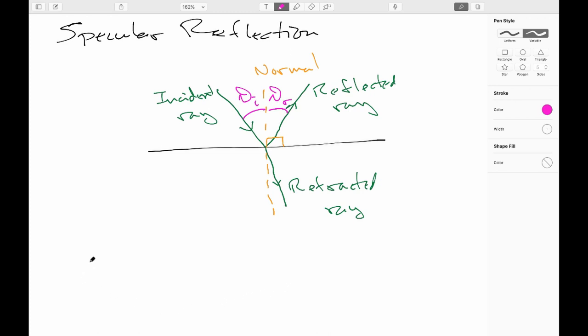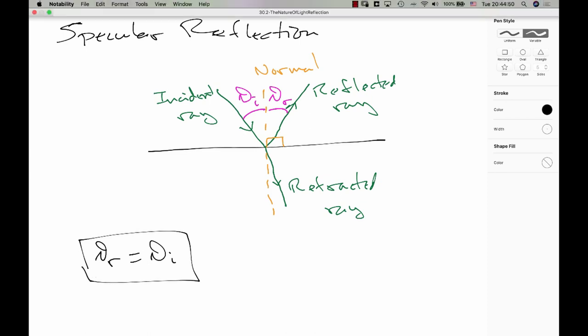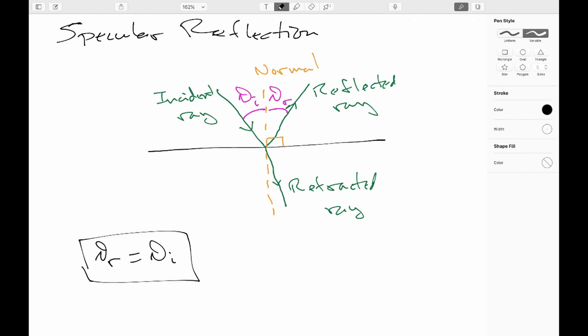So, we will say that the angle made by the incident ray and the normal, we will call that the angle of incidence, theta sub i. And we'll say that the angle made by the normal and the reflected ray is the angle of refraction, theta sub r. And we had known for a very long time, empirically, that the angle of refraction equals the angle of incidence. So, it will always bounce out at the same angle it comes in at.